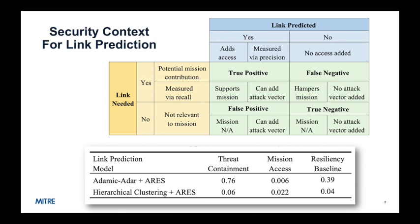The second row shows the security context measures for hierarchical clustering with ARIES link induction, which has low precision but the largest recall. This model yields a resiliency baseline of 0.04, which is significantly lower than the baseline for Adamic-ADAR with ARIES. This shows that while hierarchical clustering provides significantly more links needed by the mission, it also introduces significantly higher risks. A strong bias for preferring mission access over threat containment would need to be applied in the ARIES objective function before hierarchical clustering becomes preferable over Adamic-ADAR.